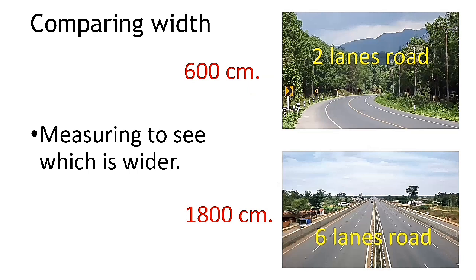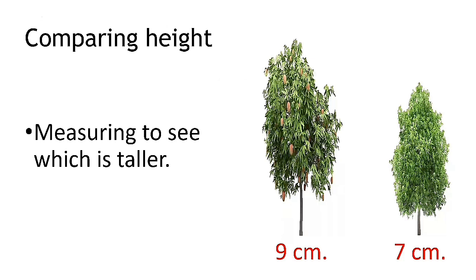Next, comparing width. I have an example here: a two-lane road and a six-lane road. The two-lane road is 600 centimeters wide, and the six-lane road is 1800 centimeters wide. So which one is wider? Yes, the six-lane road.